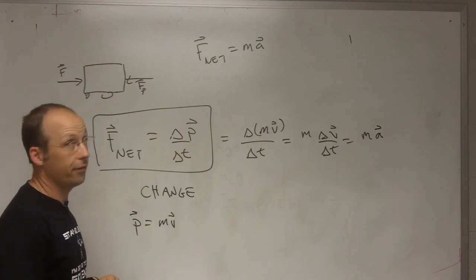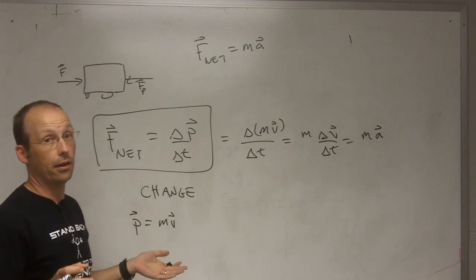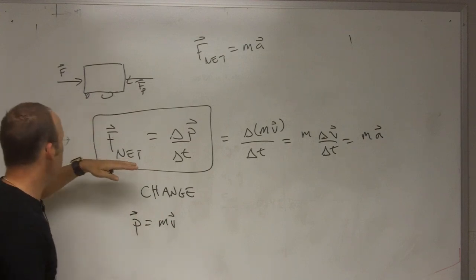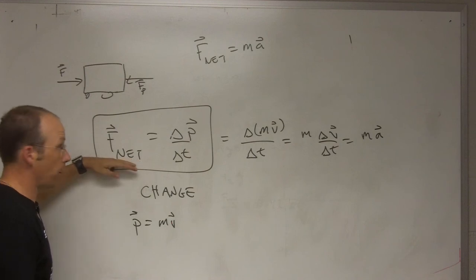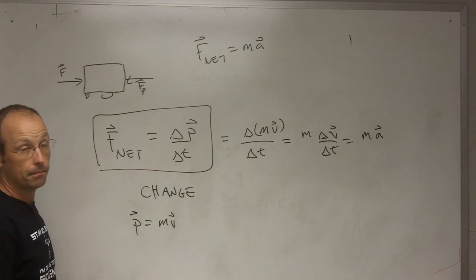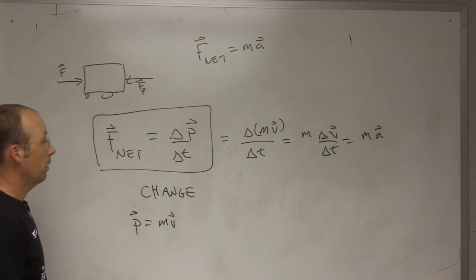The other important thing is F net. What does that mean? That means that we have to add up all the forces acting on the object. So the total force is related to the change in momentum over change in time.